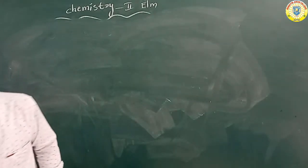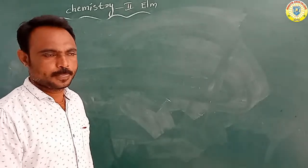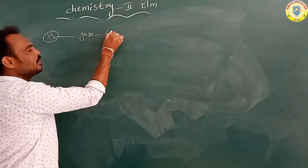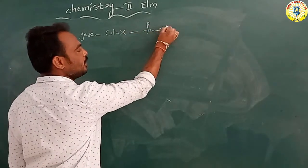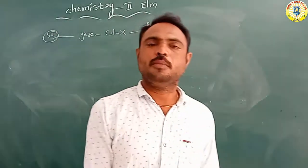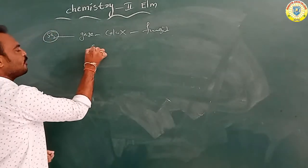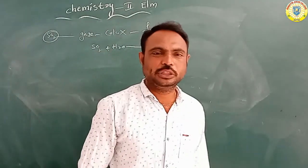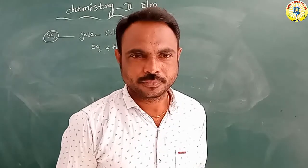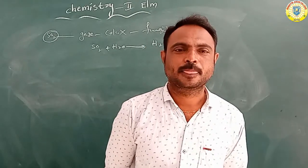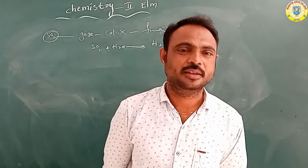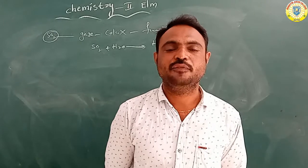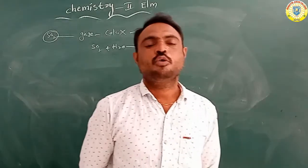The physical properties of sulphur dioxide: SO2 is a gaseous compound. It is a colourless gas with a pungent smell. It is soluble in water molecules; when sulphur dioxide dissolves in water, it forms H2SO3, that is sulphurous acid.